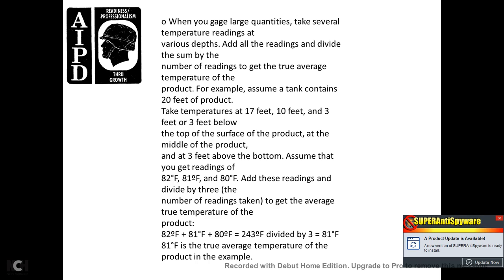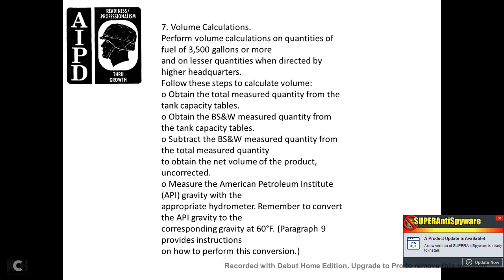When gauging large quantities, take several temperature readings at various depths. Add all readings and divide by the number of readings to get the true average temperature. For example, assume the tank contains 20 feet of product; take temperatures at 3 feet below the surface, at the middle, and at 3 feet above the bottom. If your readings are 82, 81, and 80 degrees Fahrenheit, add them: 82 + 81 + 80 = 243, divided by 3 = 81 degrees Fahrenheit — the true average temperature of the product.